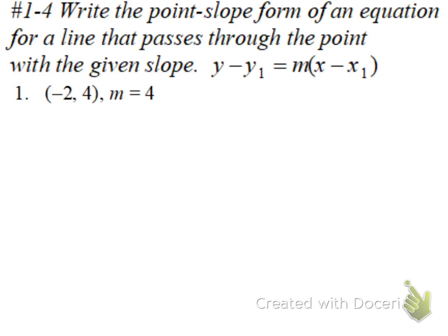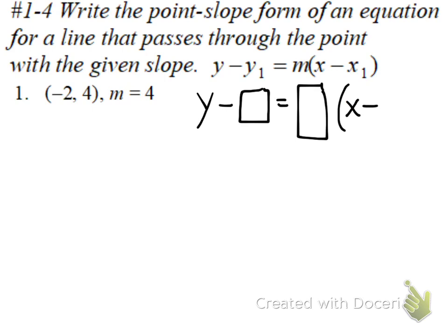So we've got point-slope form here, and this is the formula: y minus y-sub-1. We're going to fill in the box with whatever y-sub-1 is. And then we've got m, and then x minus, and we'll fill that in with whatever x-sub-1 is. Looking at this individual problem, x-sub-1 is negative 2, y-sub-1 is 4, and our m is 4 as well.